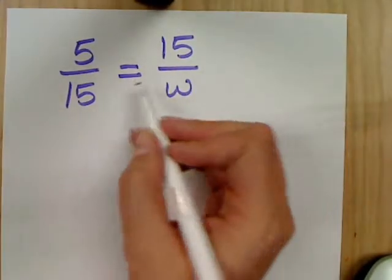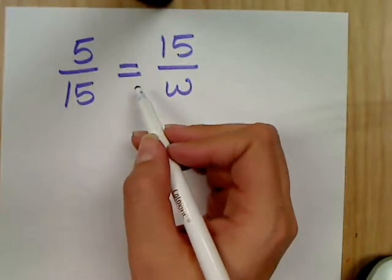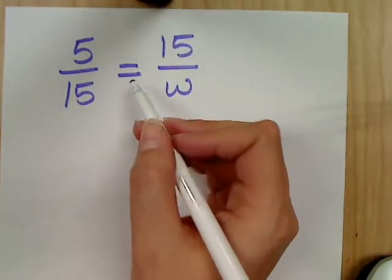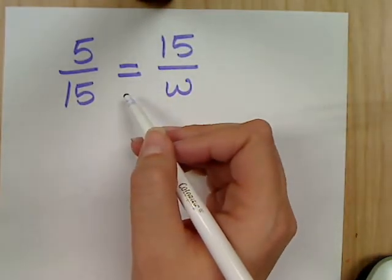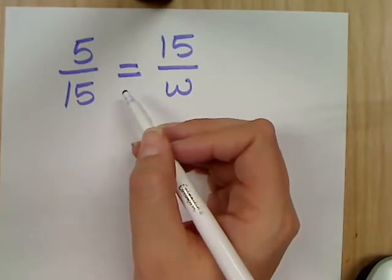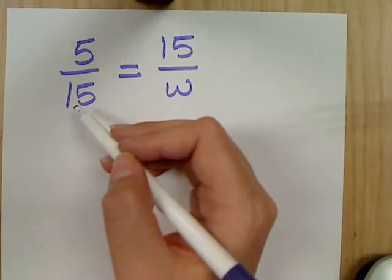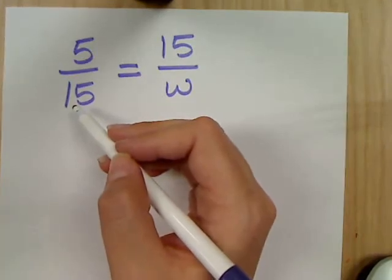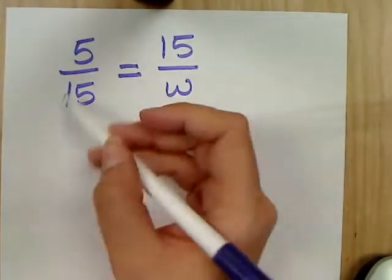For this question, it's already telling me that it is equal, which means that it is a proportion. And so, same things can apply. I can reduce this if I wanted to, and then cross-multiply, or I can just cross-multiply.